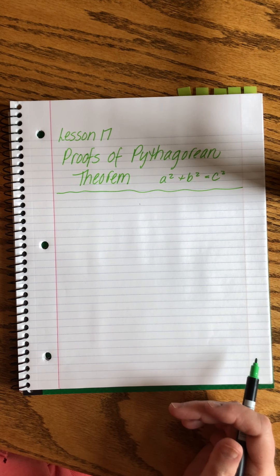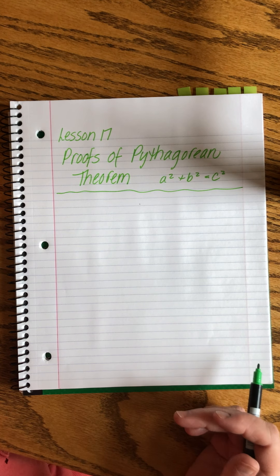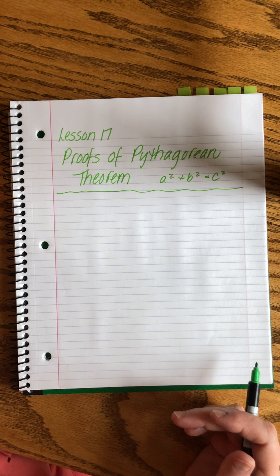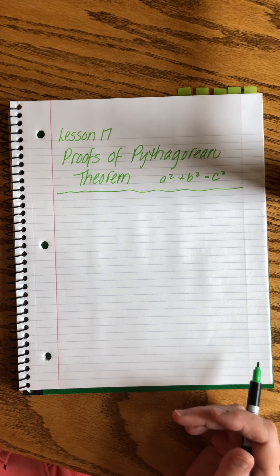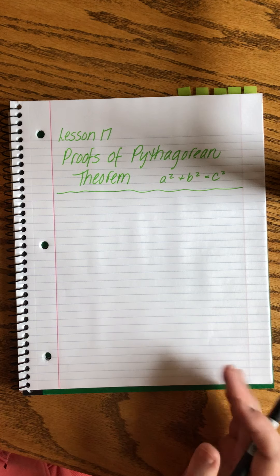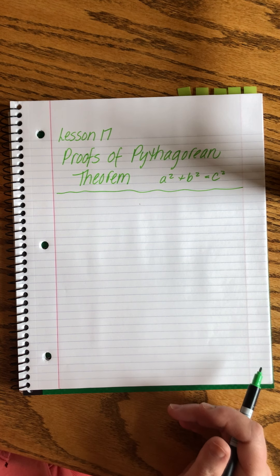People like Leonardo da Vinci and James Garfield, who was the 20th president of our United States, used to do theorems just for fun. They tried to figure out new ways to prove things in mathematics.